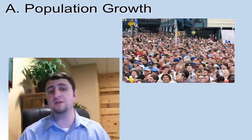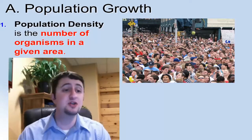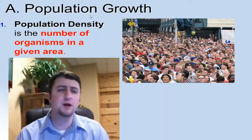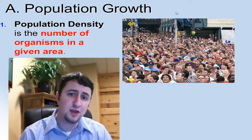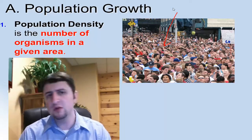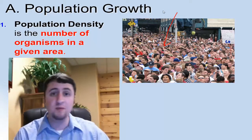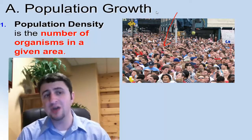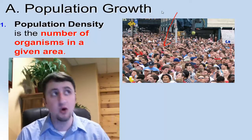The first thing I'm going to talk about is population growth or population density. Population density is the number of organisms that live in a given area. A crowded city has a very high density, but a rural area where there's just farms every couple miles has a very low density. Cities in general have very high density, but rural areas have low density.